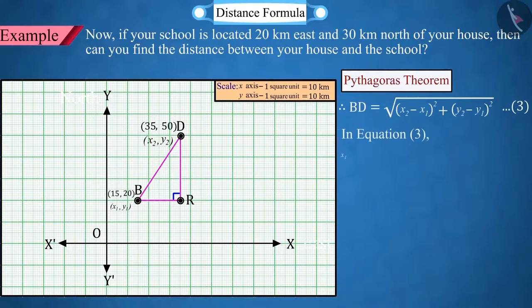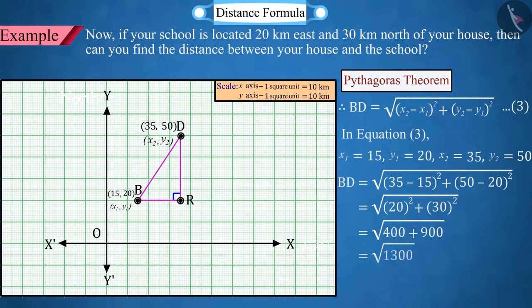Now, in equation 3, put the values of x1, y1 and x2, y2, from which the distance between the points B and D is obtained as 10 square root 13.